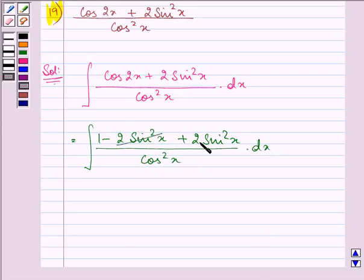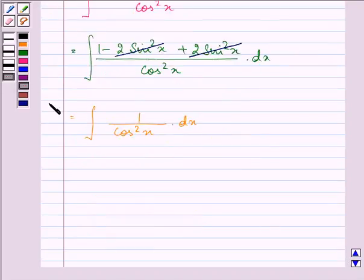On simplifying we have further as 1 divided by cos squared x into dx, which is equal to the integral of secant squared x dx, and that is tan x plus c.